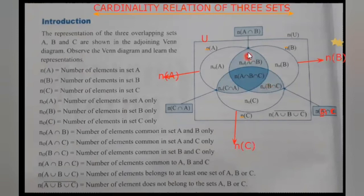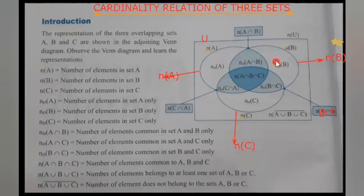Inside the rectangular box but outside all three circles, the remaining space represents the complement of (A∪B∪C). You may write this notation either inside the rectangular box outside the circles — that is the space for n of the complement of A∪B∪C. So you understood the different parts of the Venn diagram and where each symbol belongs.